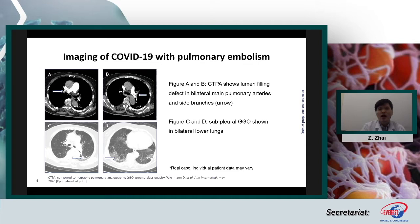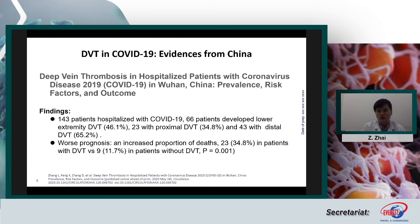After three months of follow-up, the patient recovered very well. Regarding DVT and PE in COVID-19 patients, a study just published last month in Circulation from one of my colleagues in Wuhan included 143 hospitalized COVID-19 patients. Among them, 66 patients developed DVT: 23 with proximal DVT and 43 with distal DVT. DVT was associated with worse prognosis — in the DVT group, about 35 patients died, compared to only 9 in the non-DVT group, meaning DVT is a predictor of poor prognosis.